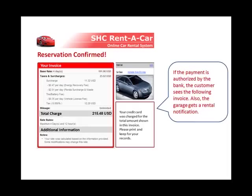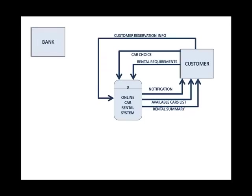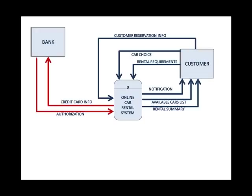Now I've provided credit card information, and the credit card has to be authorized by the bank. So I'll introduce the second external entity, which is the bank. The bank can either send that the card was authorized and charged, or maybe the card was declined. The system takes what it got from the customer and gives it to the bank — the customer is not interacting with the bank directly. So the credit card info goes to the bank and the authorization comes from the bank to the system.